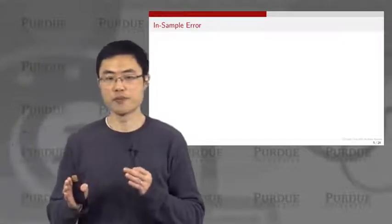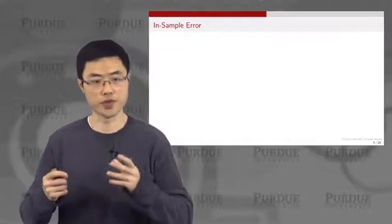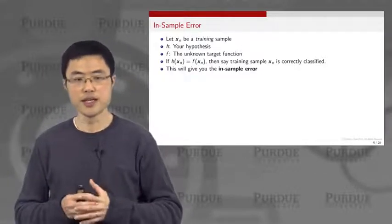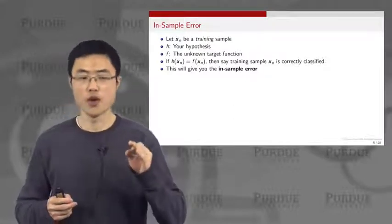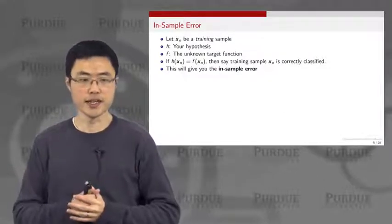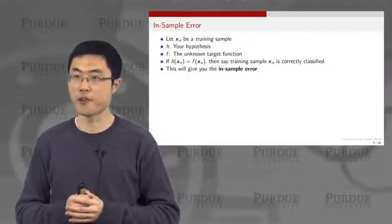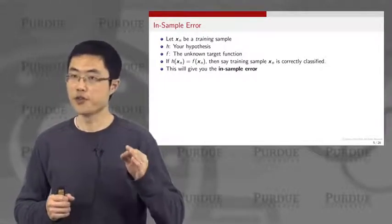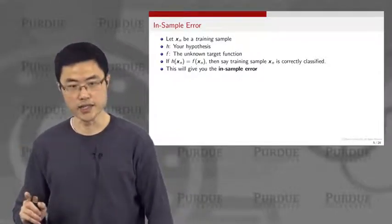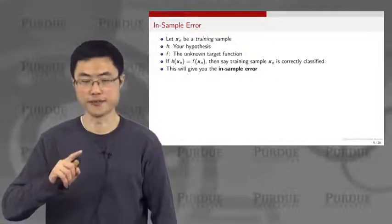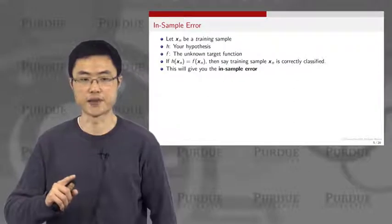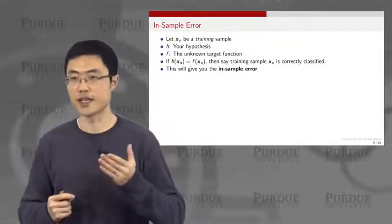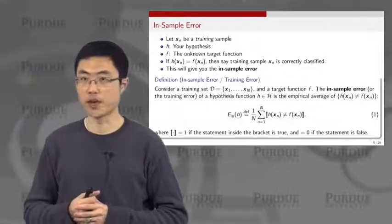Let me remind everyone what we mean by training error and testing error. Training error is also called the in-sample error. The in-sample error is defined as the probability where your prediction is not the same as your target. If H applied to Xn is exactly the same as F at Xn, then the training sample is correctly classified and there is no training error. However, if your prediction H is not the same as the ground truth F, then there is a training error.